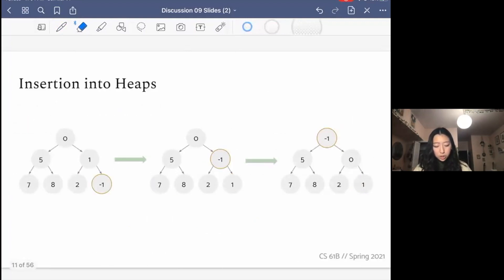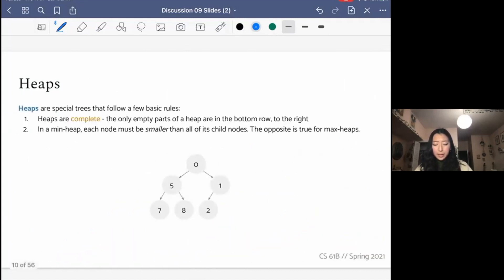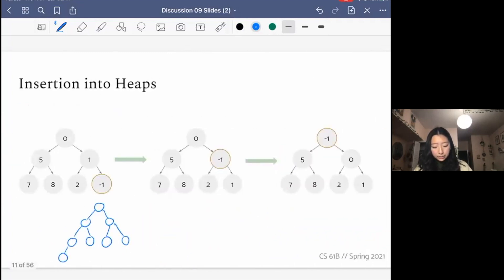For insertion into heaps, what we do is we put it at the next empty spot. So that means to the leftmost spot. For example, if our heap looked something like this, the next empty spot would be here. Then the next empty spot would be here, then here. And then finally, once we finished filling this whole row, now we can make a new row. And this ensures the completeness property, that the only empty parts of the heap are in the bottom row to the right. And so that's how we choose which spot to put it in.